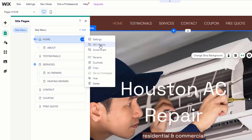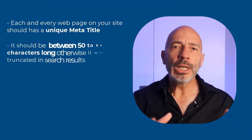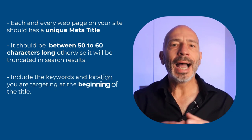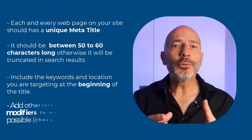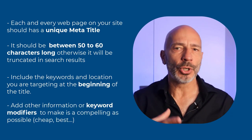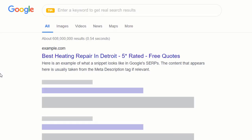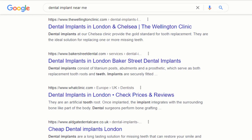Here is the best way to create an effective meta title: make sure every page on your site has a unique meta title; it should be between 50 to 60 characters long, otherwise it will be truncated in search results; include the keywords and location you are targeting at the beginning of the title; and feel free to add other information or keyword modifiers to make it as compelling as possible. For example, for an HVAC specialist in Detroit trying to rank for 'heating repair service': 'Best Heating Repair in Detroit | Five Star Rated | Free Quotes.'